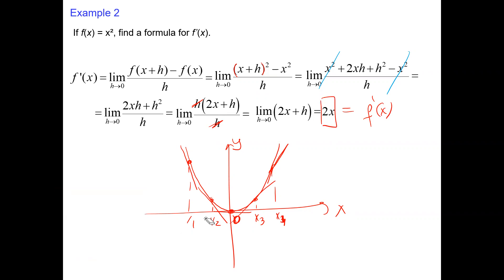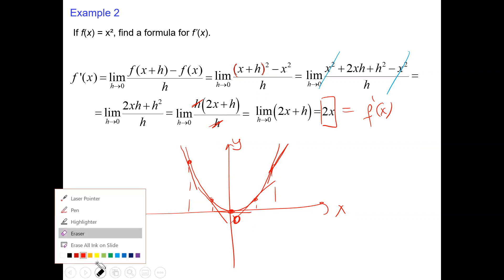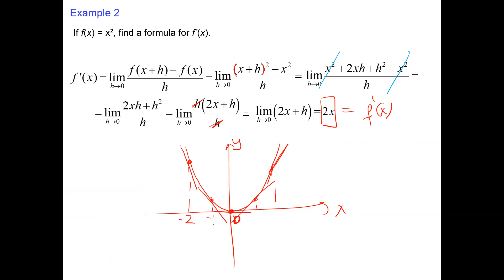F prime of x equals 2x. At x equals negative 2, slope is negative 4; at negative 1, slope is negative 2; at 1, slope is 2; at 2, slope is 4. We have the formula in terms of x: for x squared, f prime is 2x.